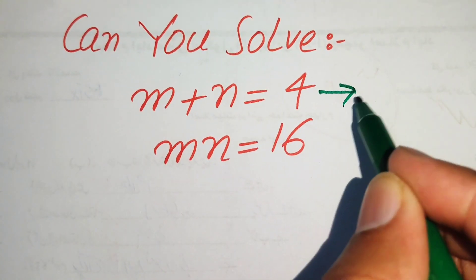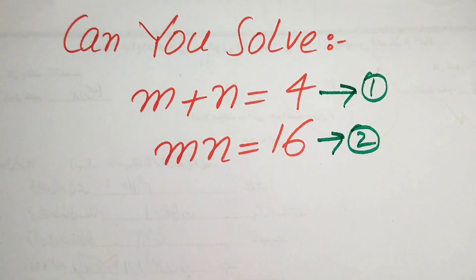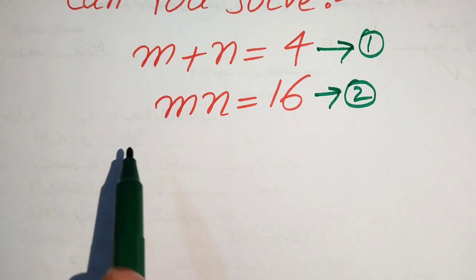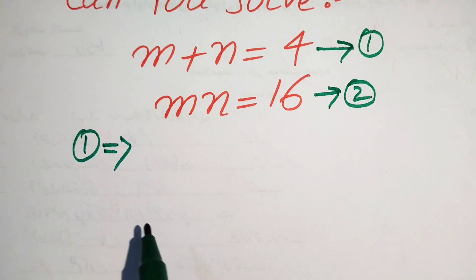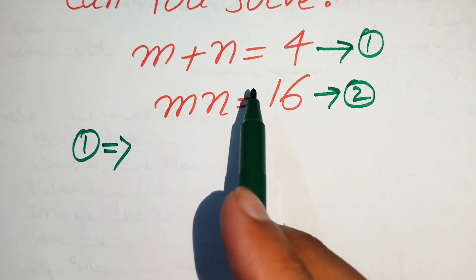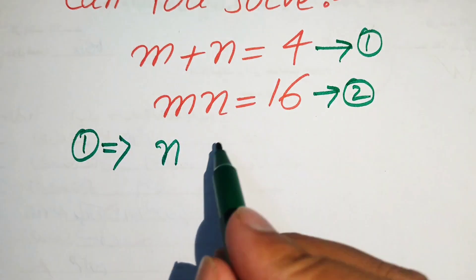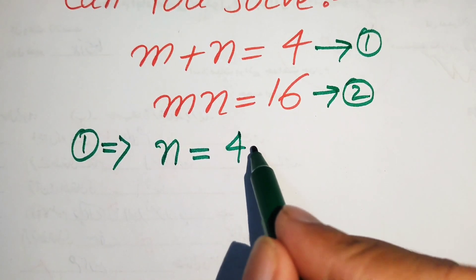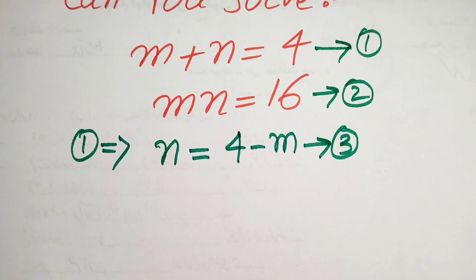We call the first equation number one and the second equation number two. Focusing on equation number one — m plus n equals 4 — we move m to the right hand side, giving us n equals 4 minus m. We call this equation number three.